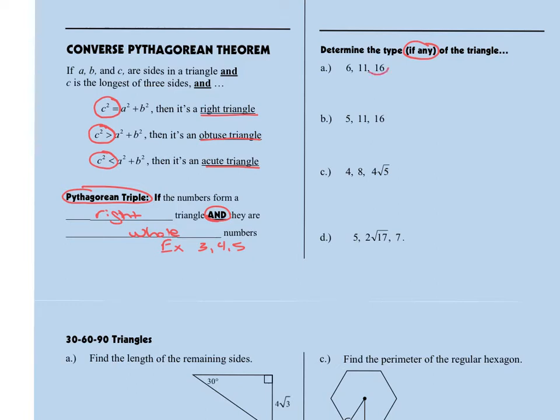Now our biggest side here is 16, and when I square 16, I'm going to get 256. Now I'm going to square the other two values. Six squared is 36, 11 squared is 121, and when I add my 36 and my 121, I'm going to get 157. Now when I do this comparison, the c squared that I found first is more, so this triangle will be obtuse.